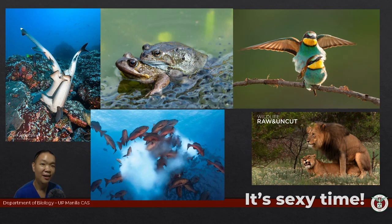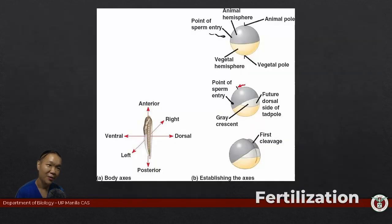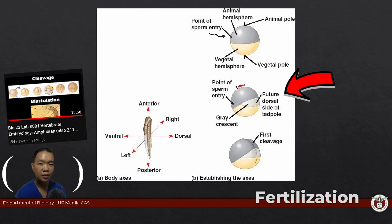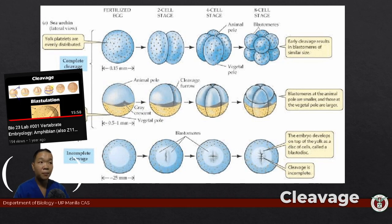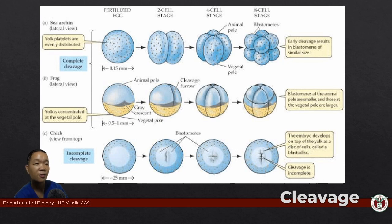After all that sexy time, we have touchdown, and also the establishment of the dorsal-ventral axes of the organism via the gray crescent. A correction from a previous video: the gray crescent is actually opposite the sperm entry point. Cleavage is when the single-celled zygote starts to divide to form a ball of many cells. The type of eggs based on the amount and distribution of yolk affects the type of cleavage the zygote undergoes.